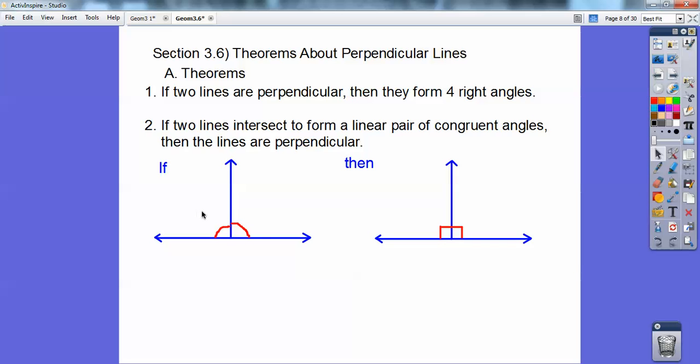So here's two lines that intersect to form a linear pair, and these guys are congruent. If these linear pairs are congruent, then they make right angles. They have to because they add up to 180, so if they're congruent, they each got to be 90 and 90. So there's my 90s right there, so they're perpendicular.